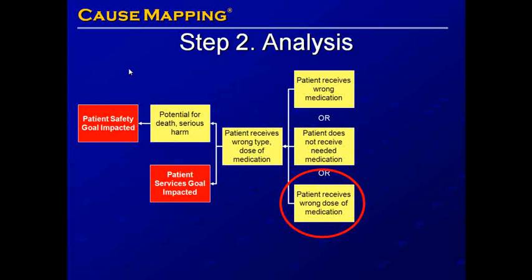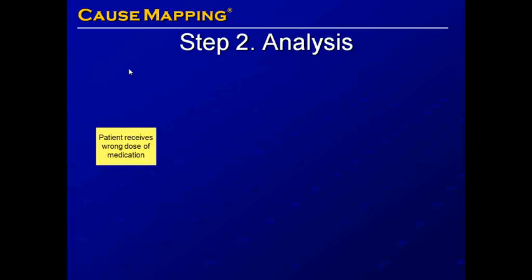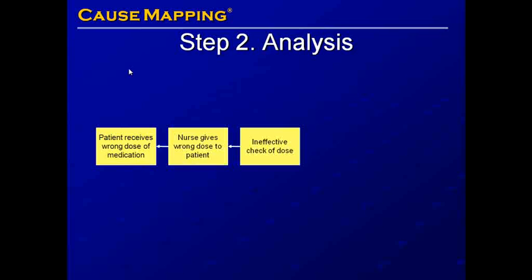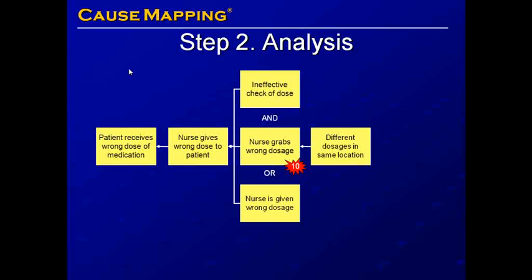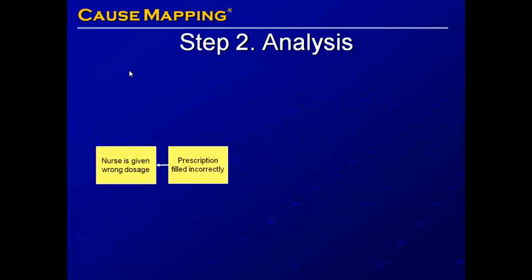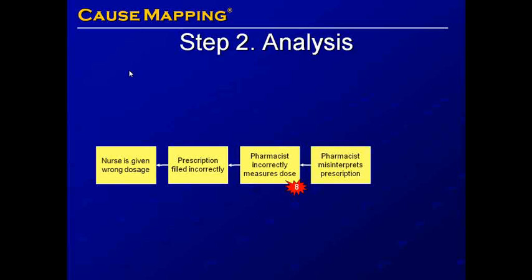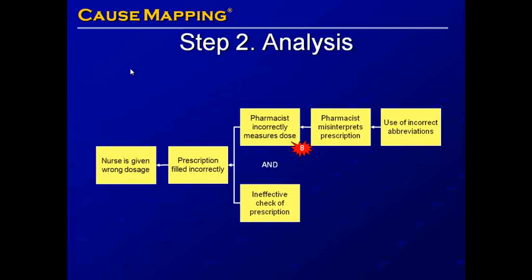Now we're going to add additional detail about a patient receiving the wrong dose of medication. The patient may receive the wrong dose because the nurse gives the wrong dose, with an ineffective check of the dose. The nurse grabs the wrong dosage — an error at step 10 — potentially because there are different dosages in the same location, or the nurse is given the wrong dosage. The nurse may be given the wrong dosage because the prescription is filled incorrectly. The pharmacist may incorrectly measure the dose — an error at step 8 — potentially because the pharmacist misinterprets the prescription due to the use of incorrect abbreviations. There is also an ineffective check of the prescription that resulted in the wrong dosage getting to the patient.